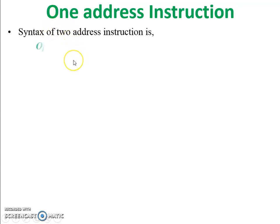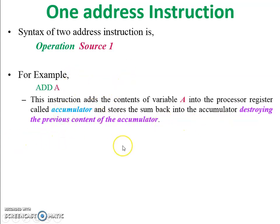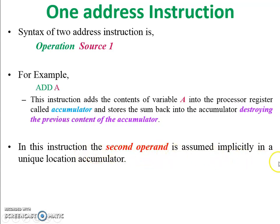The final answer is stored into Y: MOVE Y, R1 — R1 is the source and Y is the destination. One address instruction syntax: operation and source one only — there is no explicit destination. For example: ADD A — what about the other value? This instruction adds the content of variable A into the processor register called the accumulator and stores the sum back into the accumulator, destroying the previous content of the accumulator.